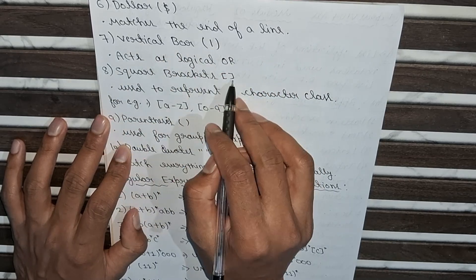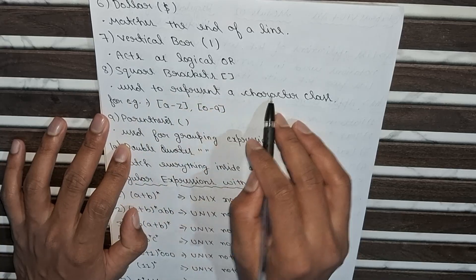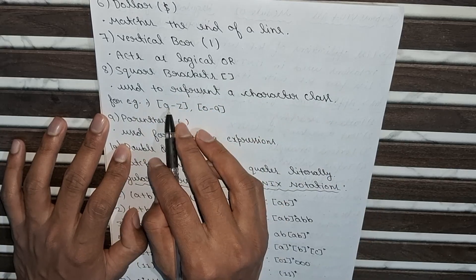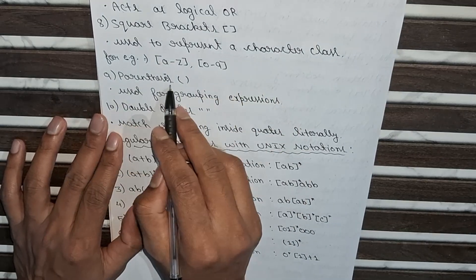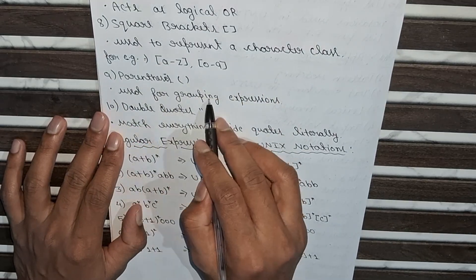And the eighth one is square brackets - it is used to represent a character class, for example, a to z and 0 to 9 numbers. And the ninth one is parenthesis, it is used for grouping expressions.